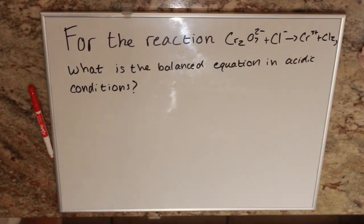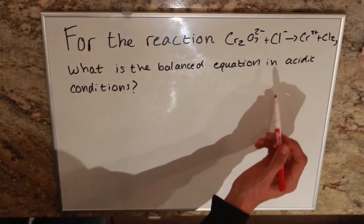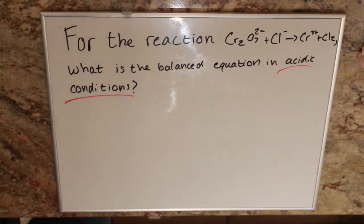This question is asking us for the reaction between chromate plus chlorine gives us chromium 3 plus plus chlorine gas. What is the balanced equation in acidic conditions? So in acidic conditions is a key word here. That means that we are only going to be able to add hydrogen ions to the equation.